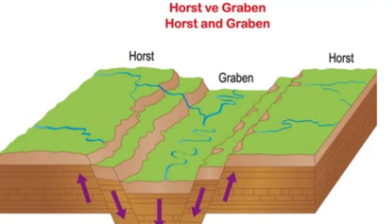Horsts are raised blocks of land that are created by the stretching and pulling apart of the earth's crust. When two parallel faults move away from each other, the block of land in the middle is lifted up. This creates a high, elongated ridge or mountain range, with steep slopes on either side. Horsts can vary in size, ranging from a few hundred meters to several kilometers in width.